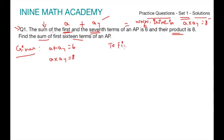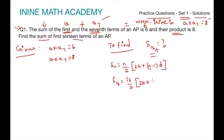Given data is A plus A7 equal to 6 and A into A7 equal to 8. Now, we need to find sum of first 16 terms. From where we should start solving the problem? Since we need to find S16, let us start from S16 itself. We know Sn formula: Sn equal to n by 2, 2a plus n minus 1 into d. In this case n is equal to 16. So S16 equal to 16 by 2, 2a plus 15d because I have substituted 16 for n. This gives us 8, 2a plus 15d.